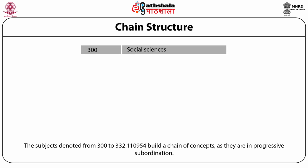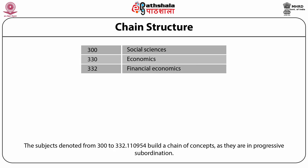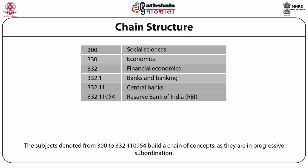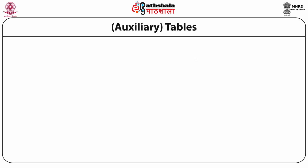Here is an example from the social sciences showing hierarchy: 300 social sciences, then 330 economics, then 332 financial economics, then 332.1 banks and banking, then 332.11 central banks or reserve banks, and then 332.1109954 for the Reserve Bank of India.